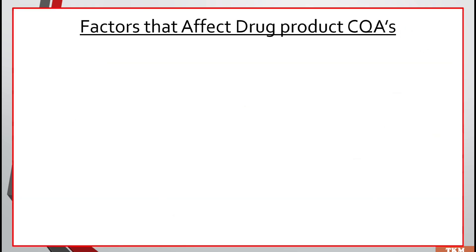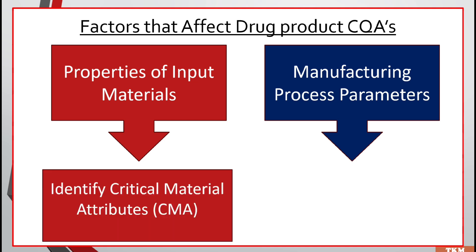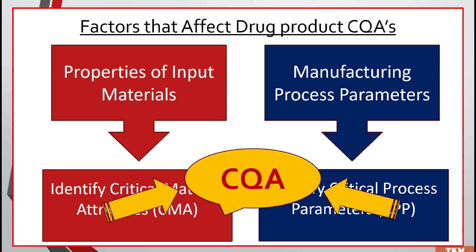Let's take a look at the factors that affect drug product critical quality attributes. There are two factors: one is properties of input material and the second is manufacturing process parameters. Input materials consist of raw materials, starting material, APIs, and packaging and labeling material. A key element of drug development and product or process characterization is a requirement to identify and control critical material attributes and critical process parameters that influence critical quality attributes.